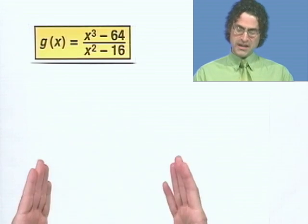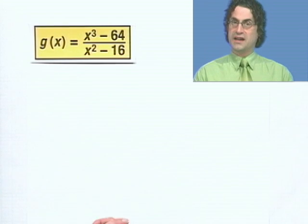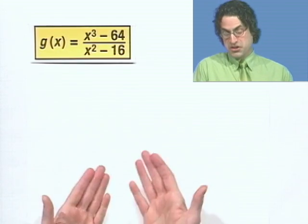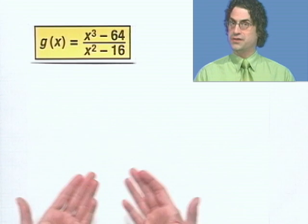Here's the one I want to take a look at. It's the rational function g of x equals x cubed minus 64 all divided by x squared minus 16. Our mission is to graph this thing as best we can. So the first thing I want to do is ask, is this written in reduced form? Can I simplify this? Can I factor the numerator? Can I factor the denominator?